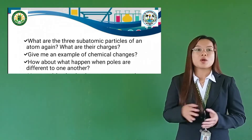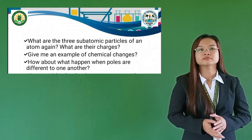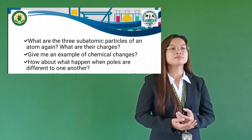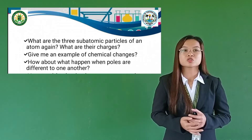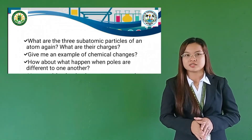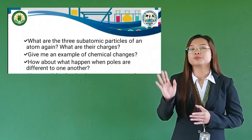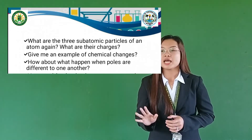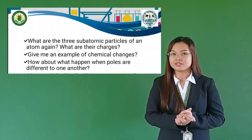Before we proceed to our quiz, let's have a short review of what you have learned today. For our first question, what are the 3 subatomic particles of an atom again? That's right — proton, electron, and neutron. Next question: what are their charges? Very good. Proton has a positive charge, electron has a negative charge, and neutron has an equal charge.